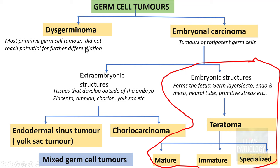In the previous session we discussed about dysgerminoma, embryonal carcinoma, yolk sac tumour, and choriocarcinoma. Now we will look into the tumours of totipotent germ cells which differentiate into embryonic structures. That's teratoma, which is further classified into mature, immature, and specialized teratoma.